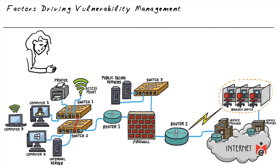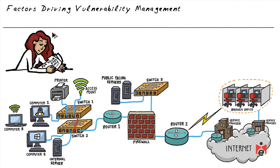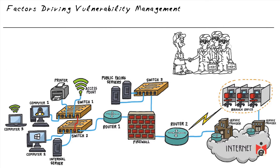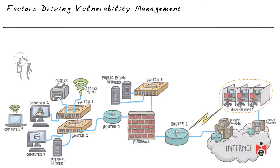Another factor is the classification of data. A company might have data labeled confidential, private, proprietary, or public. In government environments, classifications include top secret, secret, confidential, sensitive but unclassified, or unclassified. Wherever sensitive data is traveling or stored, we need to ensure we don't have vulnerabilities that would allow an attacker to access it.